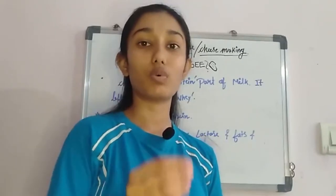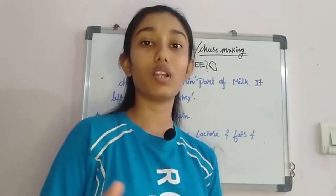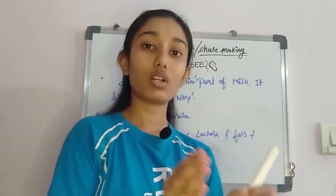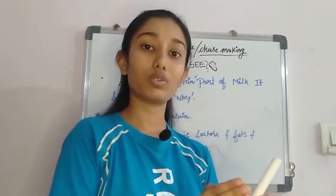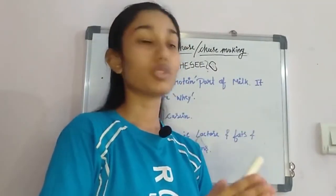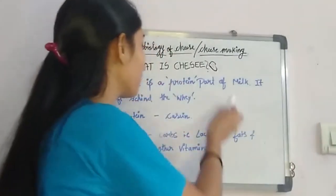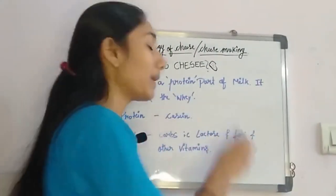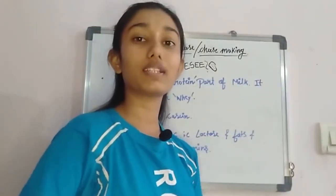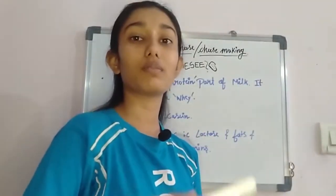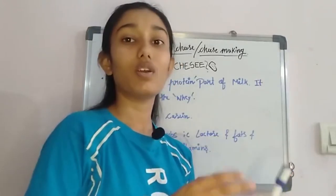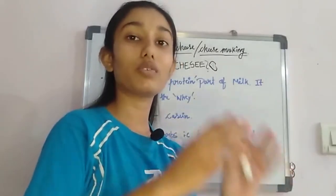We make curd at home and we also see that the watery part is different from the solid part of milk. The curd is coagulated and it has protein. We use that protein and go ahead to make cheese. So how does curd convert into cheese?